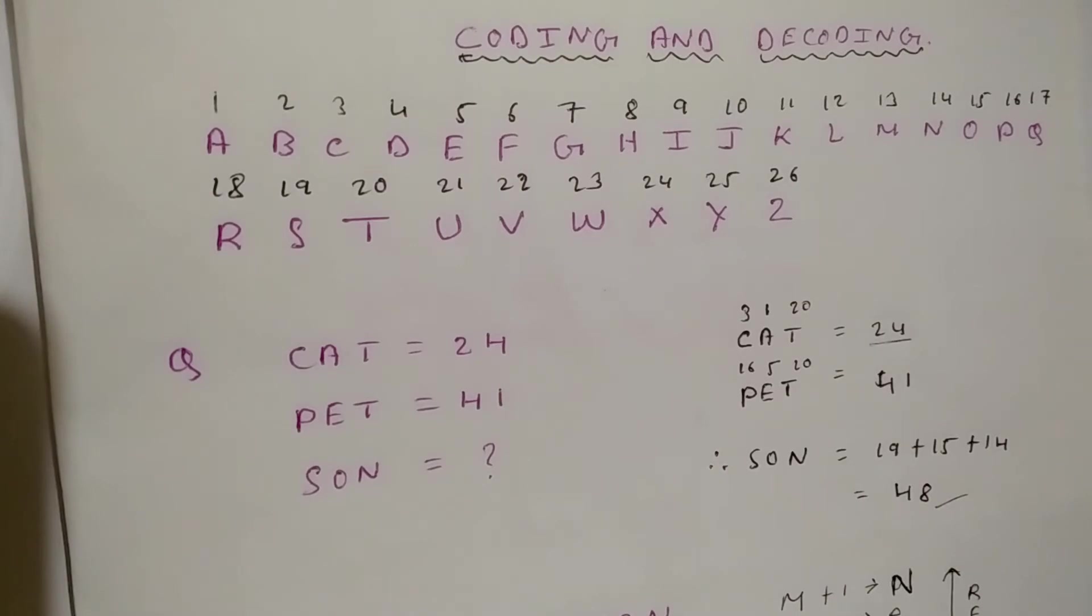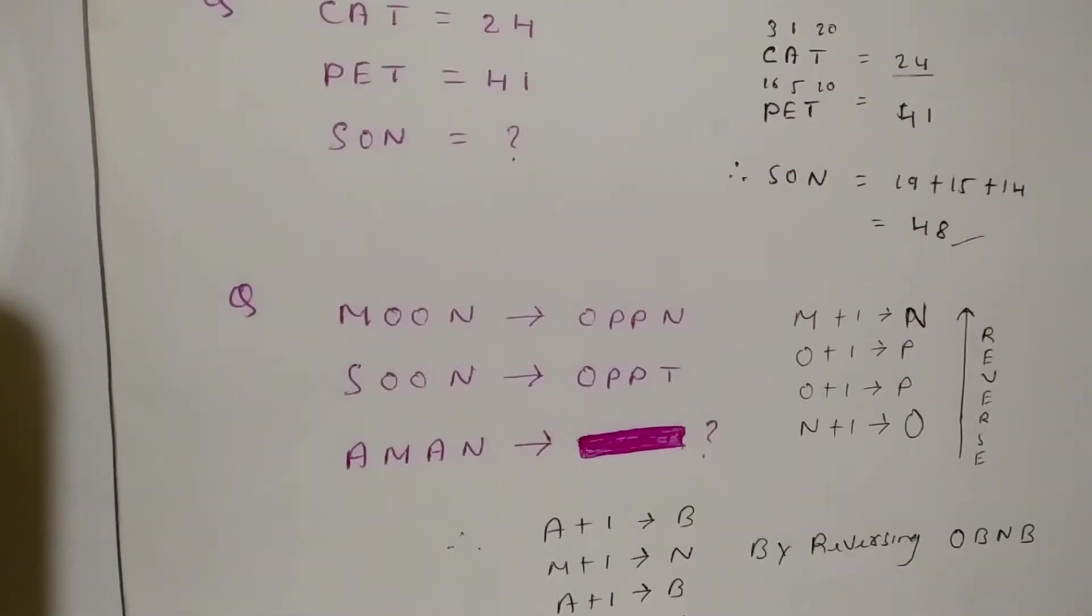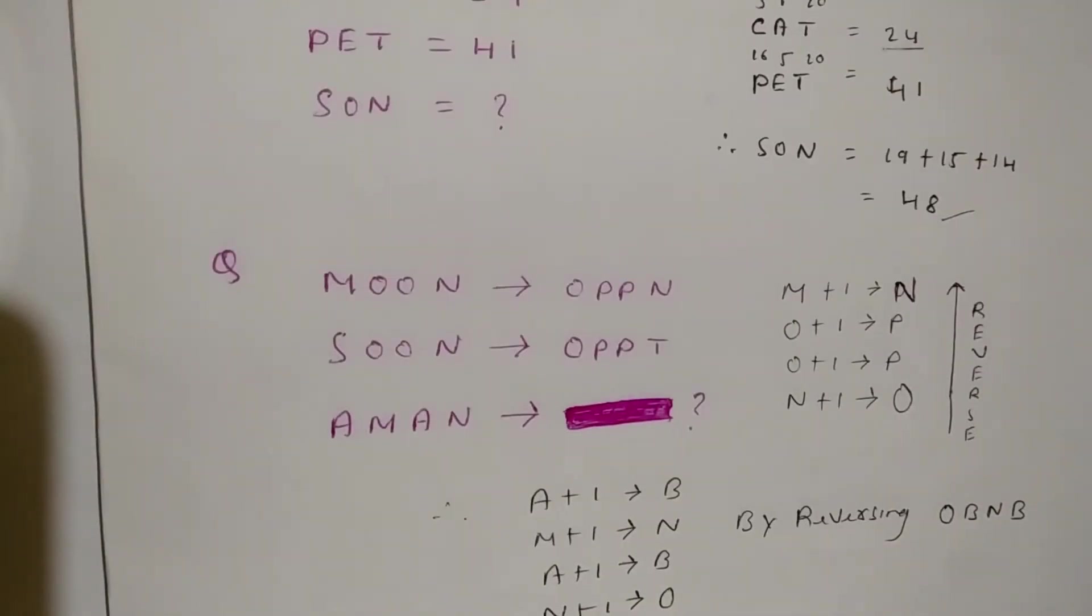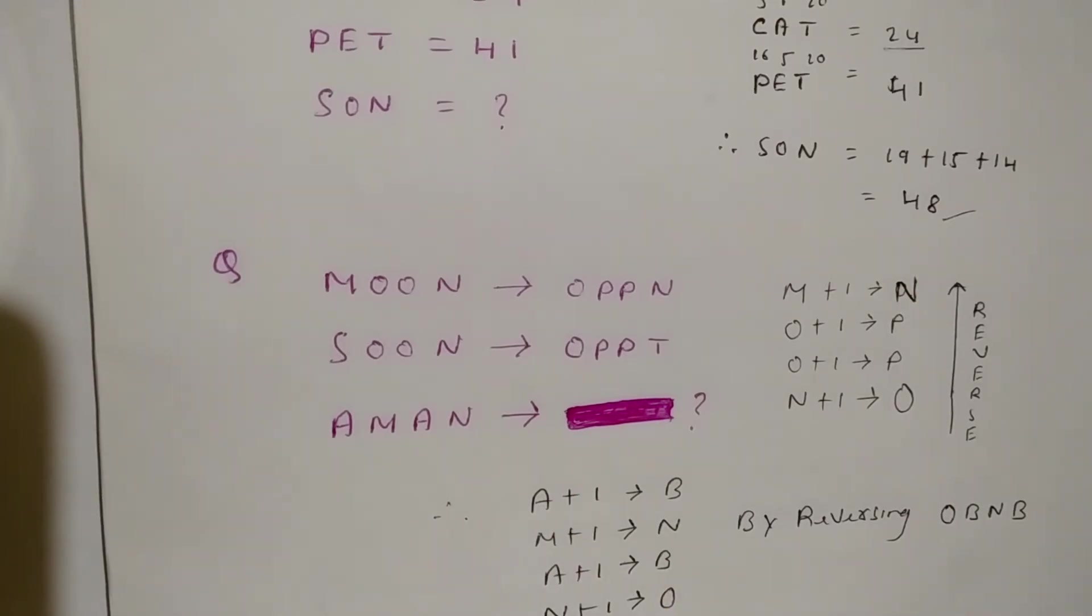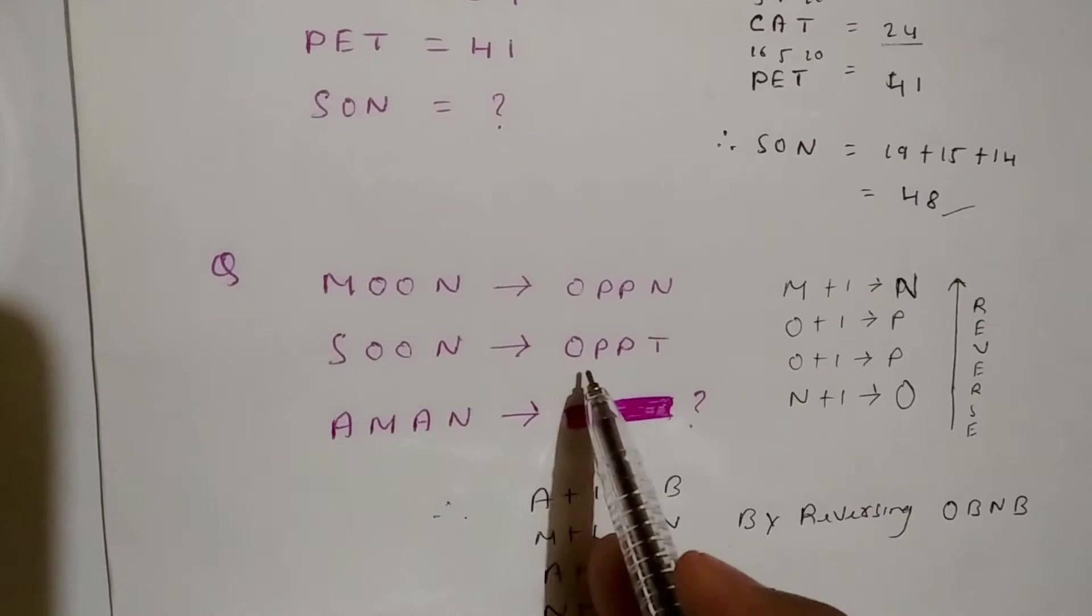Now it comes to the second question. There are lots of tricks. For this question, I suggest you pause the video and do it on your own. If you can't do it, then see my video. Suppose MOON equals OPPN and SOON equals OPPT. Then AMUN equals what?